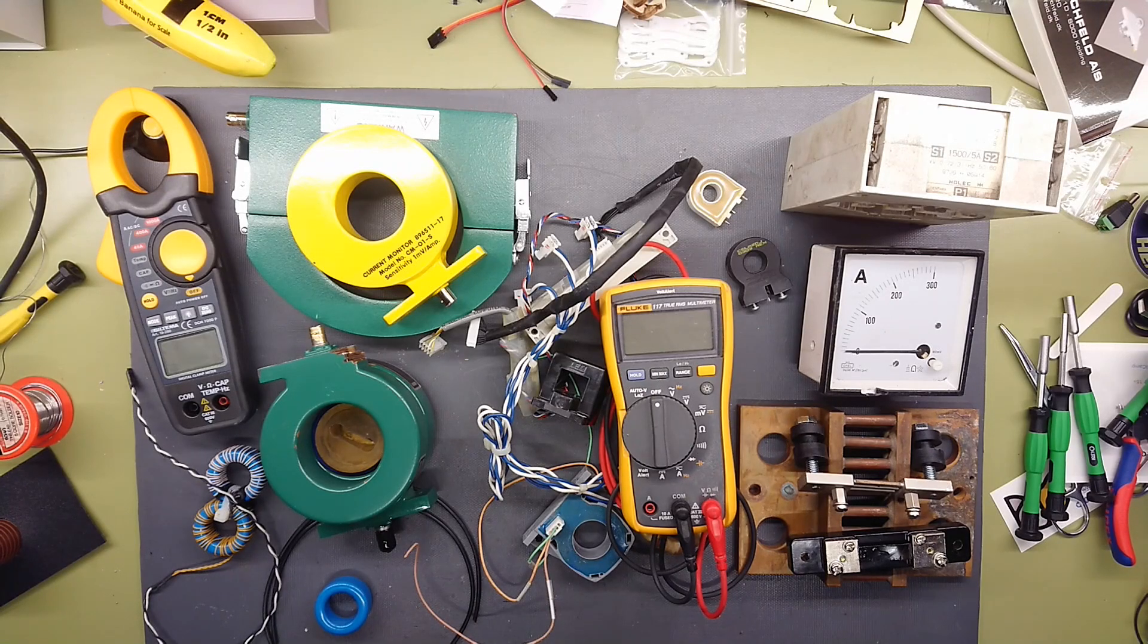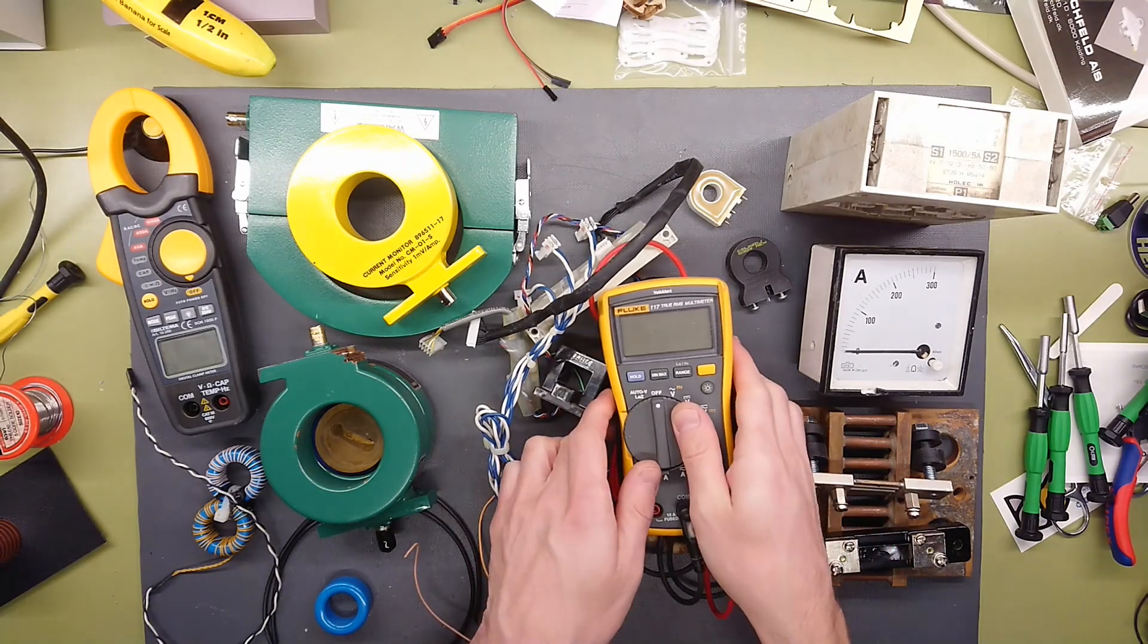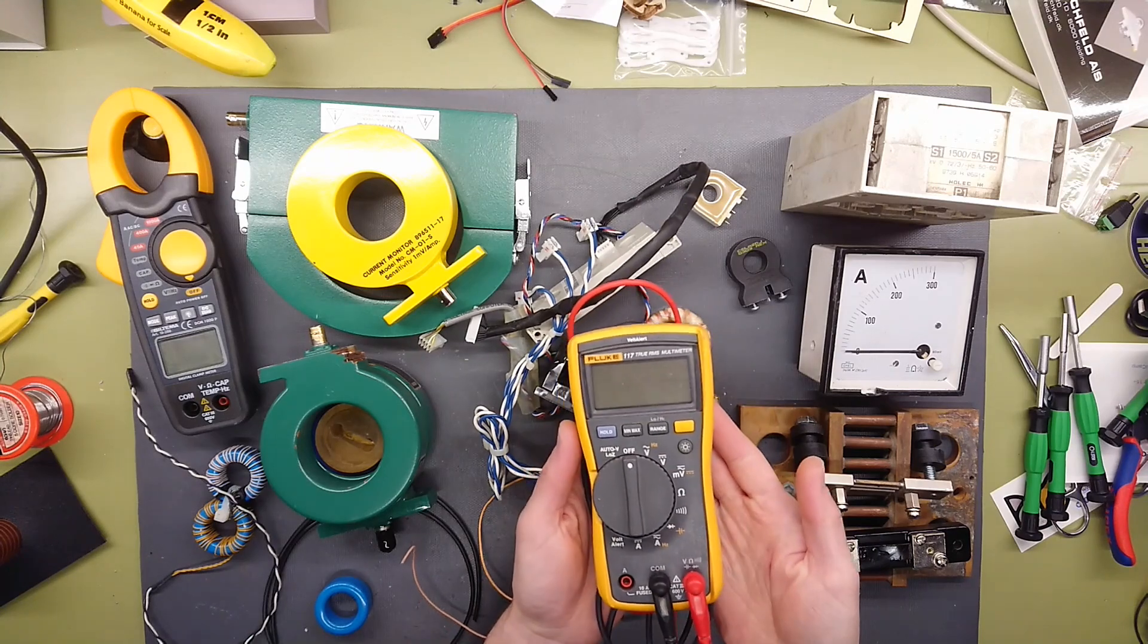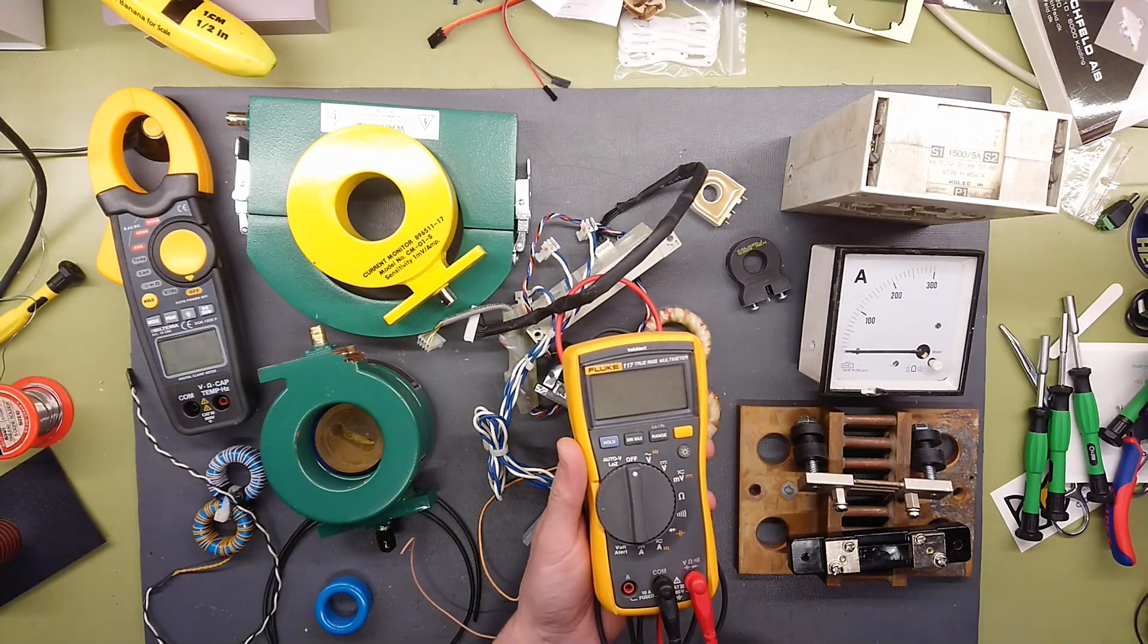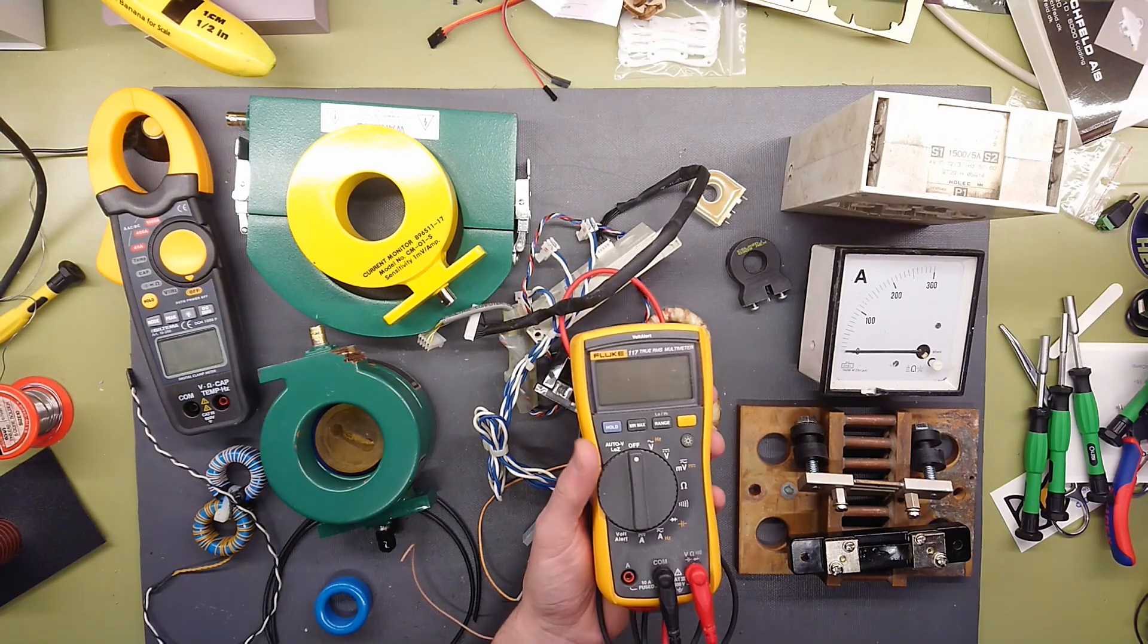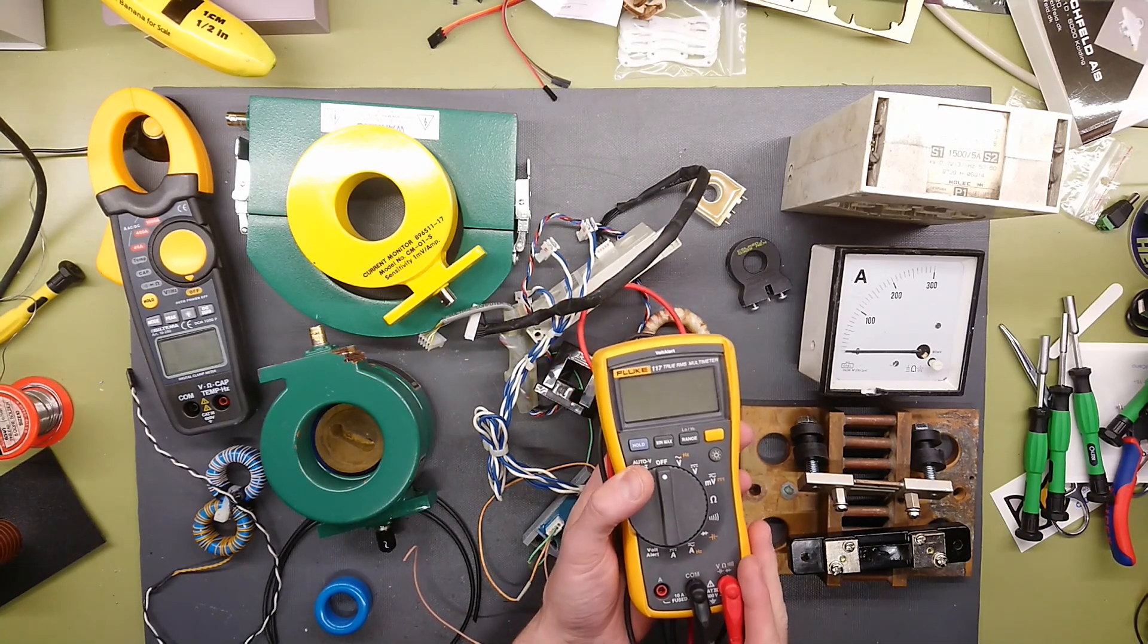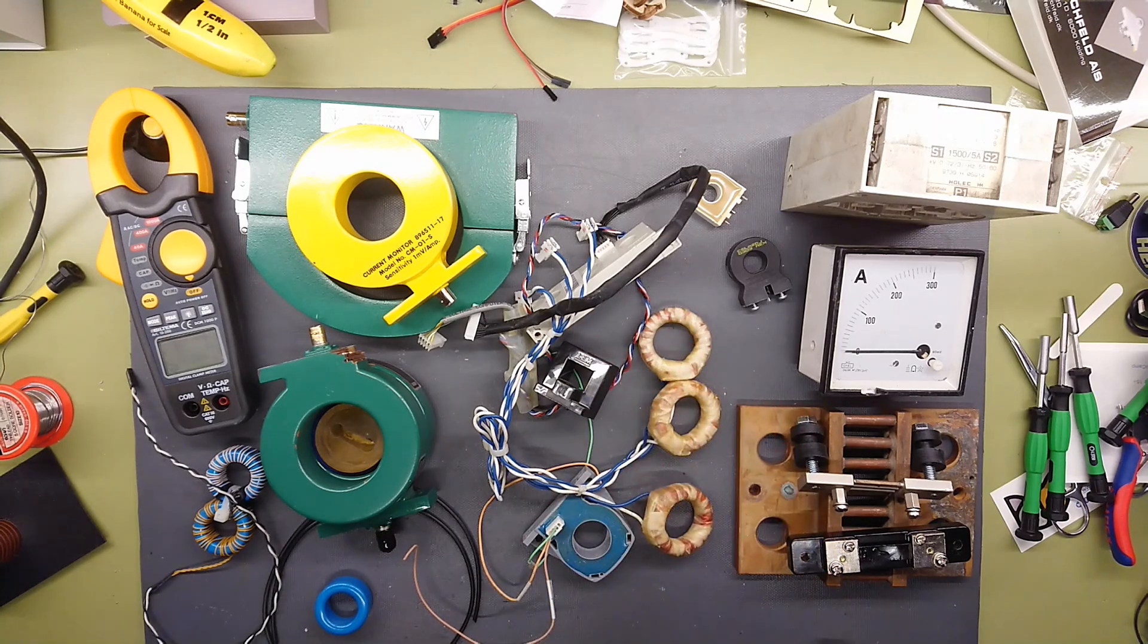Measuring current can be done in many different ways. Normally you would just grab your multimeter like this, which can measure up to 10 amps of AC and DC current, but often this will not be sufficient. We need to measure some higher currents.